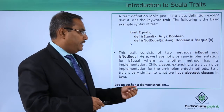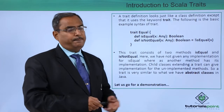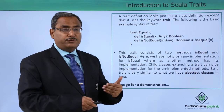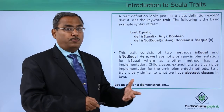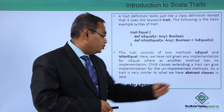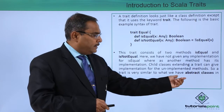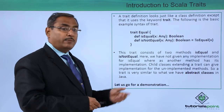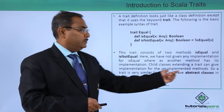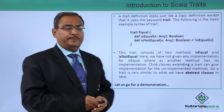Child classes extending a trait can give implementation for the unimplemented method. The class which will be implementing this trait will be providing the method body which is not implemented in the trait. A trait is very similar to abstract classes in Java code. The concept of abstract class in Java is very much similar to this trait concept in Scala.